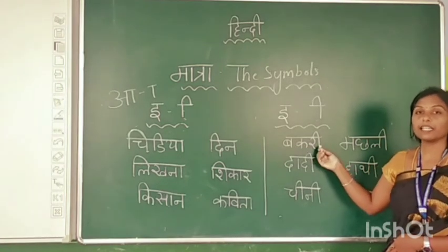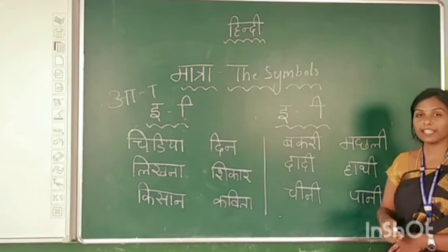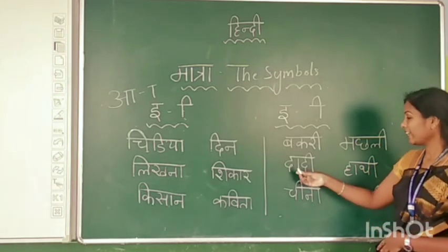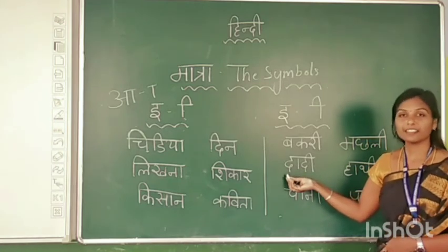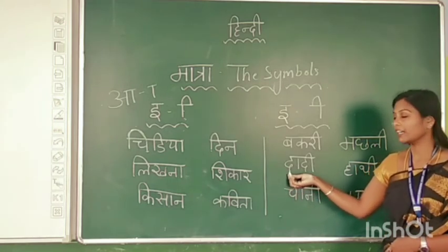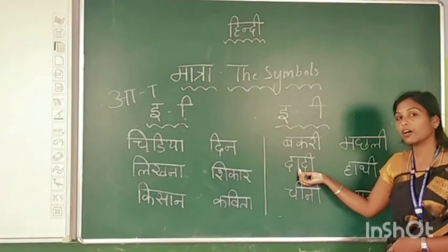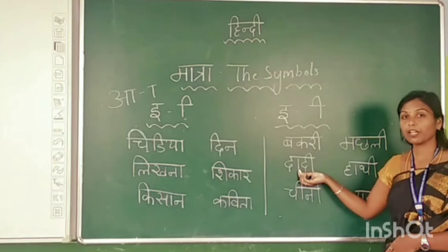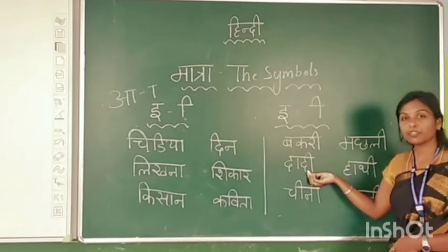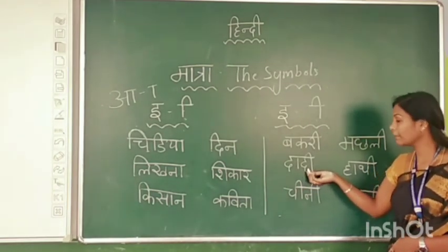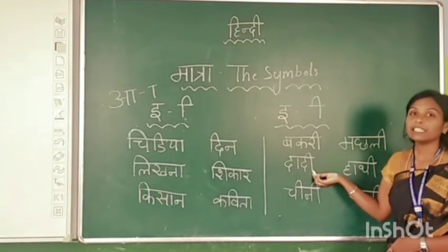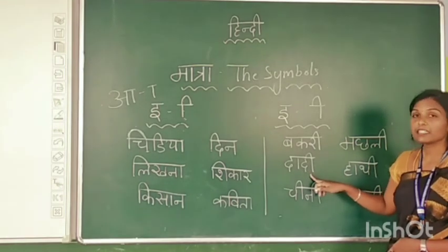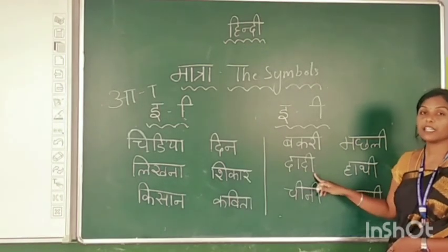Bakkari ka matlab kya hai? Goat. Bakkari means goat. And the next word: the first letter is Da — I join the symbol of AA giving Da. The next letter is again Da — Da plus E gives Di. So Da + Di = Dadi.